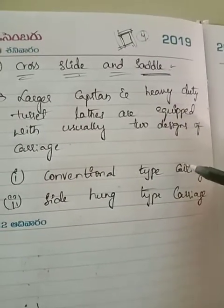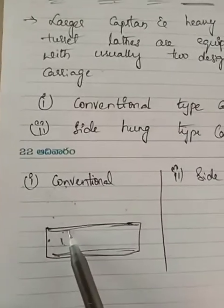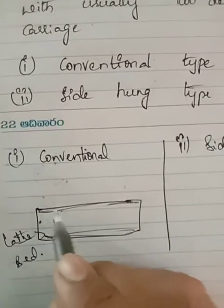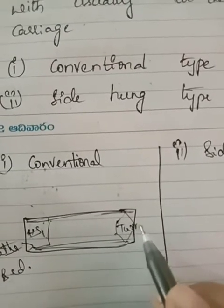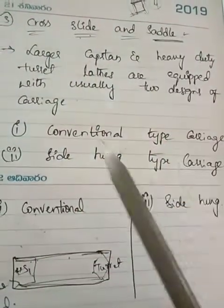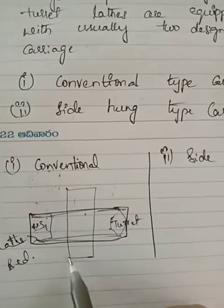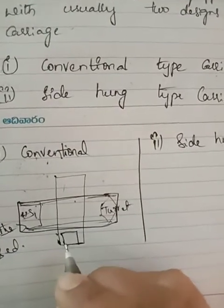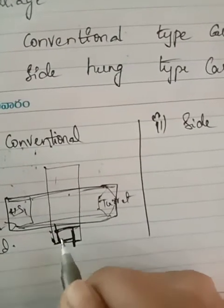This is a top view of the lathe bed. The headstock is on the left-hand side. On the right-hand side is the hexagonal turret. In between we have the carriage — saddle and cross-slide. In the conventional carriage, at the front end there is a four-way tool post, which is a square tool post holding four number of cutting tools.